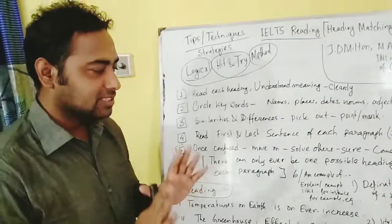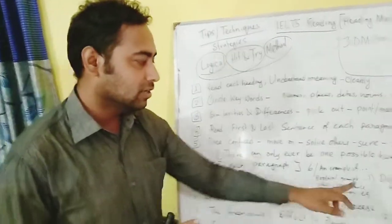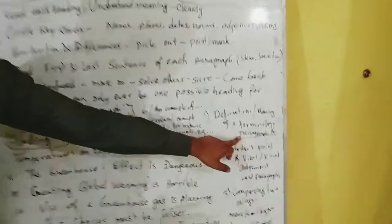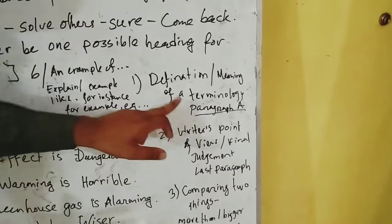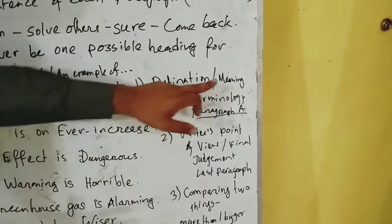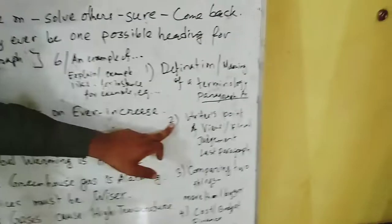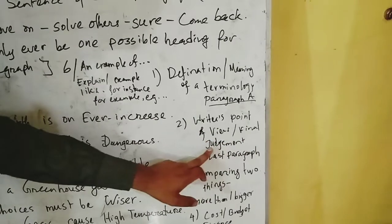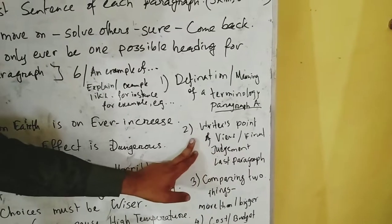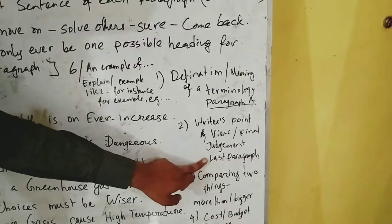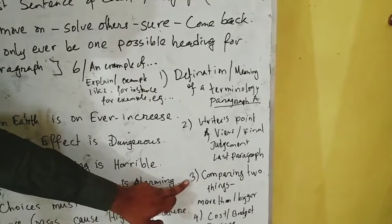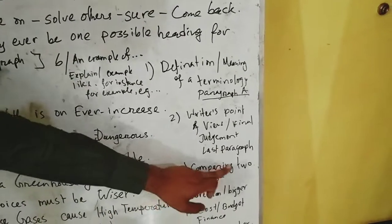Now let me explain some specific techniques. In paragraph A, in most cases you will find a definition and meaning of a terminology. In the last paragraph, the writer's point of view and final judgment will be there for sure. Another option: if there is a comparison of two things in a heading, look for that pattern.